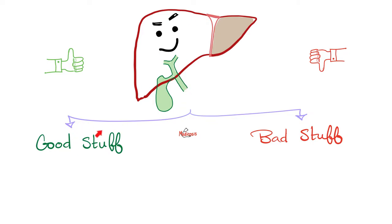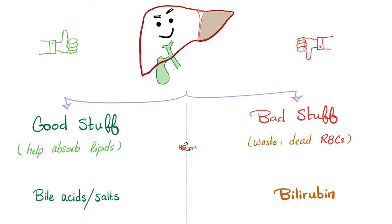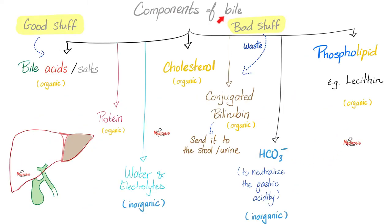Your liver makes the good stuff and the bad stuff. The good stuff? Bile acids and bile salts — they help absorb lipids in the intestine. The bad stuff, meaning the waste, is bilirubin — the waste product you get when you break down red blood cells. So bile contains both the good, like bile acids and bile salts, and the bad, such as conjugated bilirubin. We've discussed these in detail in my physiology playlist and in my video titled cholecystitis.